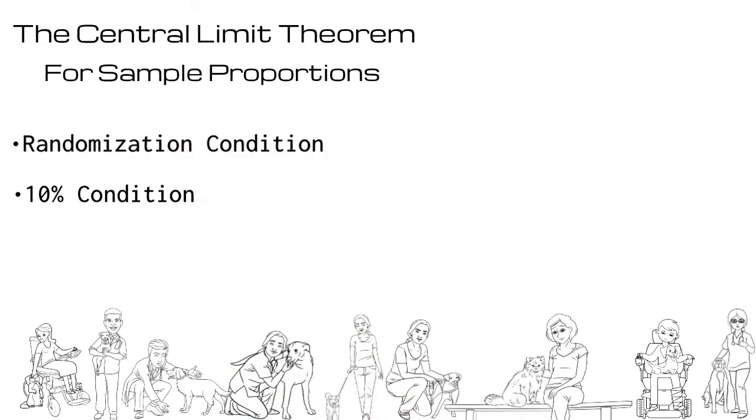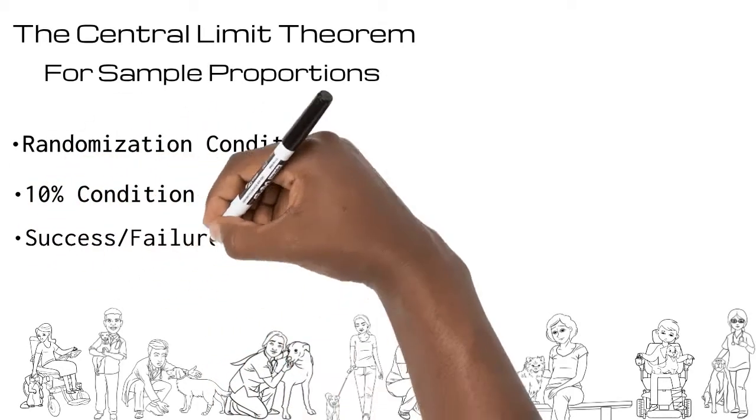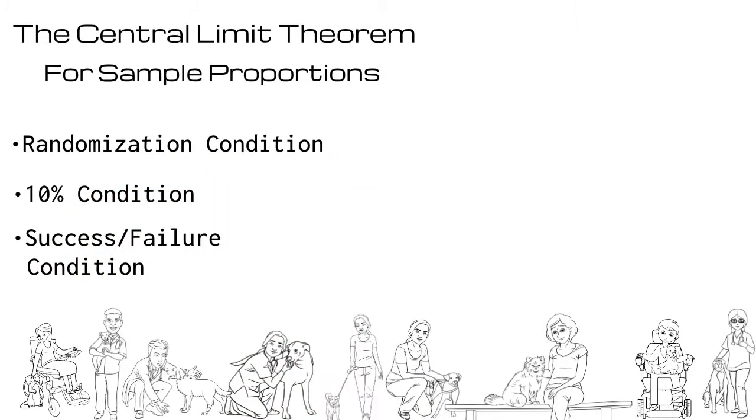Then check for the 10% condition. This means that the sample size cannot be larger than 10% of the population. Finally, check the success-fail condition. Your sample must be big enough to have at least 10 successes and 10 failures. I'll go into more depth with how to check these conditions in another video.